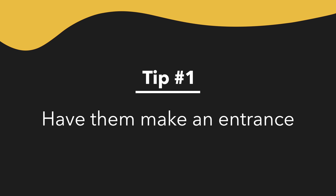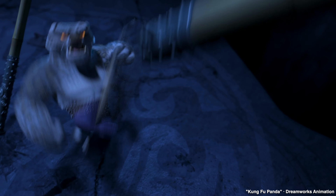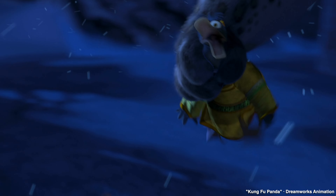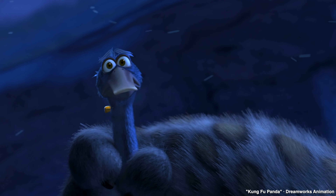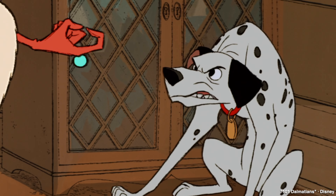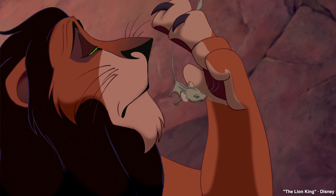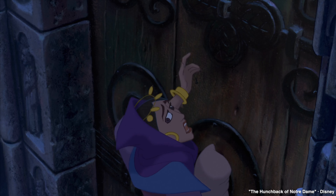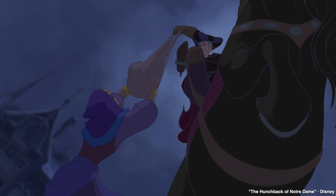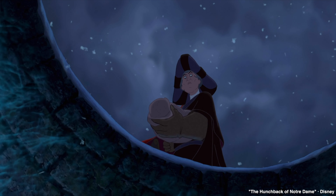Tip number one: Have them make an entrance. Tai Lung effortlessly escapes an inescapable prison, so we immediately get an idea of how dangerous he is. If you make your villain do something bad at the beginning, it sends a clear message to the audience that he or she is evil. An unforgettable introduction makes the threat real. In The Hunchback of Notre Dame, we see how evil Frollo is from the very beginning — he follows the gypsies and kills one of them.